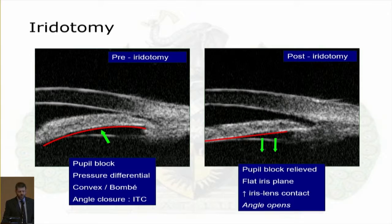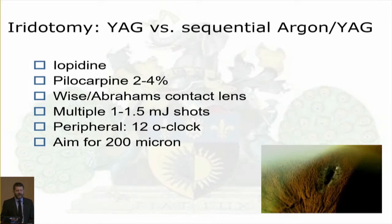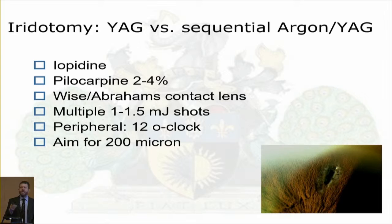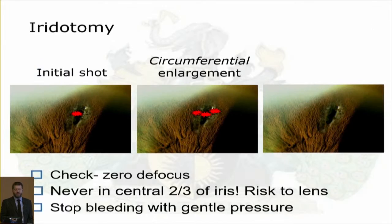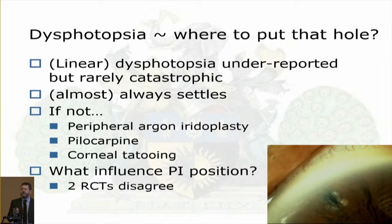With an iridotomy, we're reversing pupil block, removing the pressure differential across the iris, and hopefully opening the angle. We use pure YAG for most patients with fair or blue eyes — northern European and Russian patients. For patients with darker eyes — Indian, African, East Asian, Chinese patients — we use sequential argon then YAG to pre-treat, reducing the amount of YAG energy required. The goal is a minimum 200-micron circumferentially enlarged iridotomy to reduce the pressure differential.